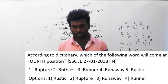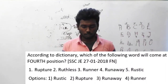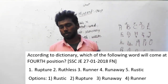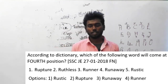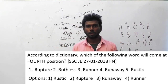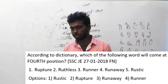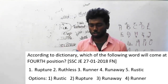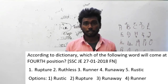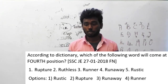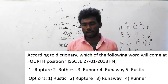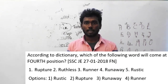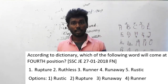Question number 145 (listed as 144): according to the dictionary, which of the following words will come at fourth position? There are five words given — find which word comes fourth. Option 1: rupture, option 2: ruthless, option 3: runner, option 4: runway, option 5: rustic. If you arrange in dictionary order, the fourth word is rustic. The answer is option A, rustic.